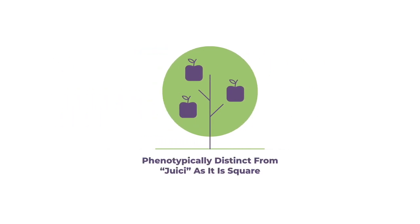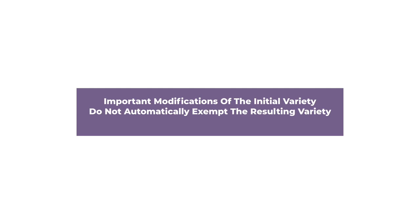Juicy Cube is phenotypically distinct from Juicy, as it is a square. This phenotypic difference results from the mutation. Importantly, modifications of the initial variety do not automatically exempt the resulting variety from being qualified as essentially derived. See UPOV — uniting breeders, protecting innovation.